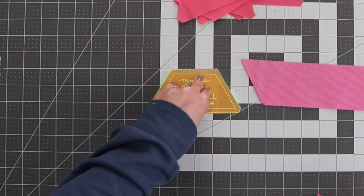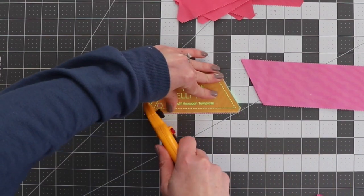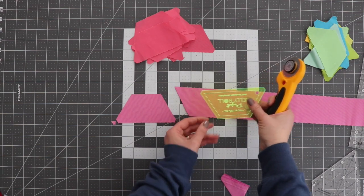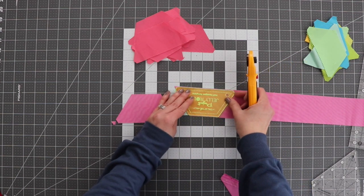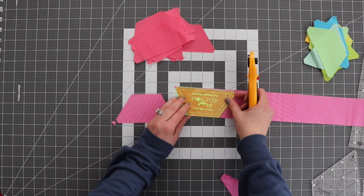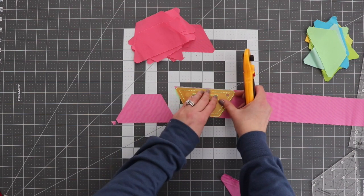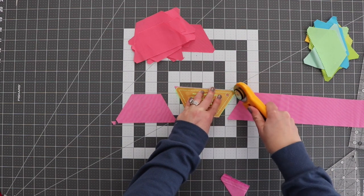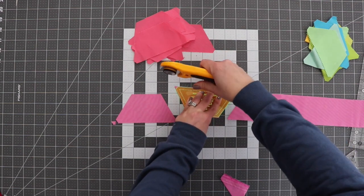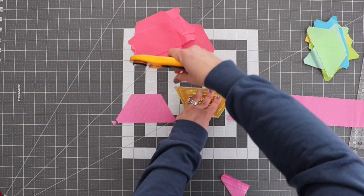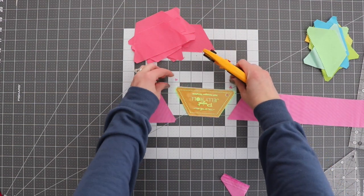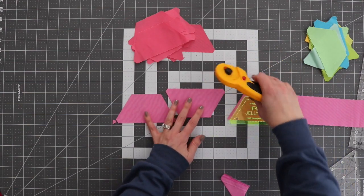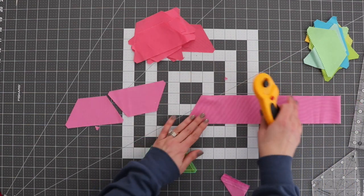Then you're going to rotate your template if you're using this one, and I'm just going to line up the edge here and again I'm just going to cut clear across this and cut the dog ears off. You've got to make sure that you hold that template really secure because it does slip a little bit. I'm just going to keep doing this all the way down this jelly roll strip.